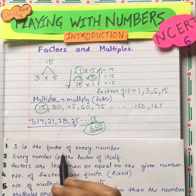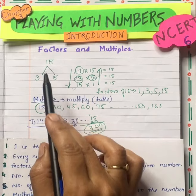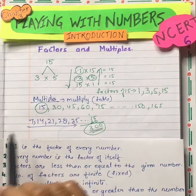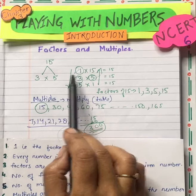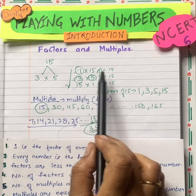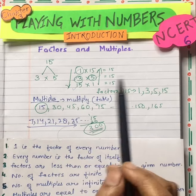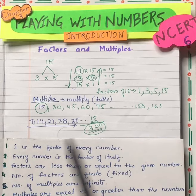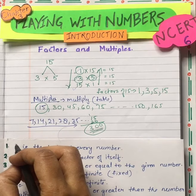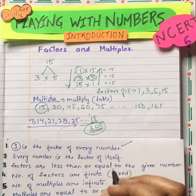Now, here are some key pointers. One is the factor of every number. It means that in the 1 times table, there are all numbers — like 1 times 15 is 15, 1 times 2 is 2, 1 times 3 is 3. So 1 is the factor of every number. You have to remember this — it will come up on MCQs and true/false questions.